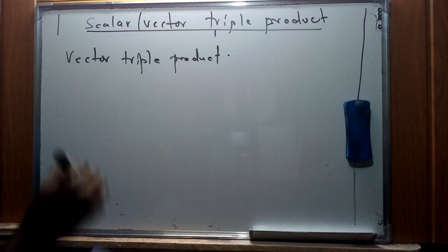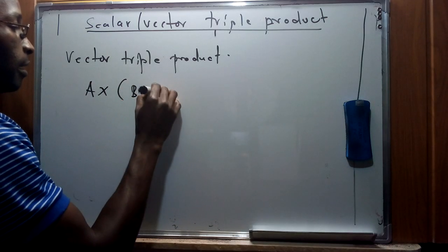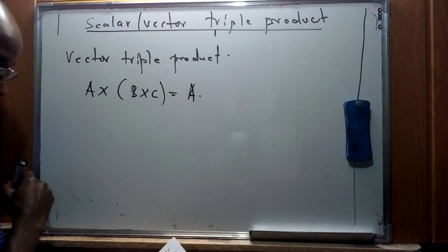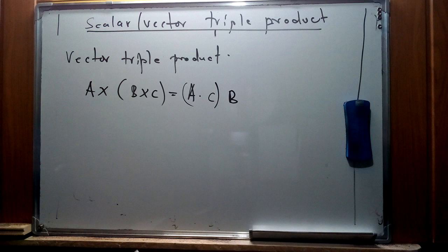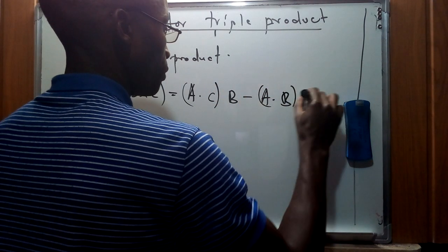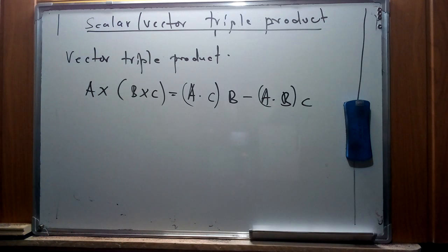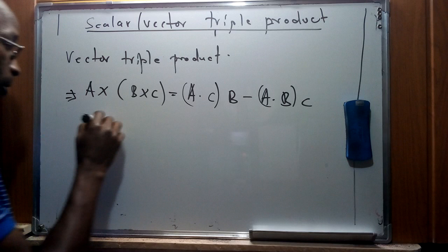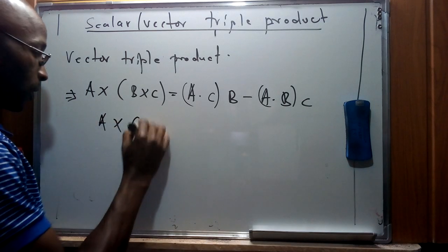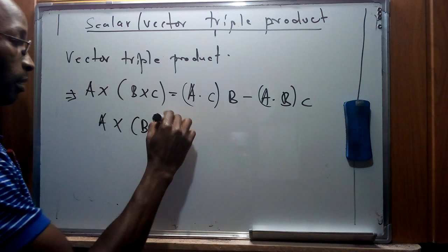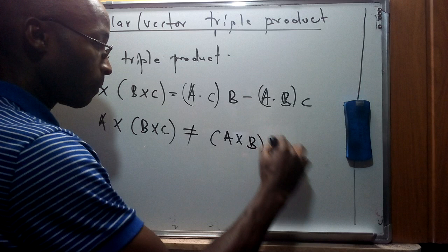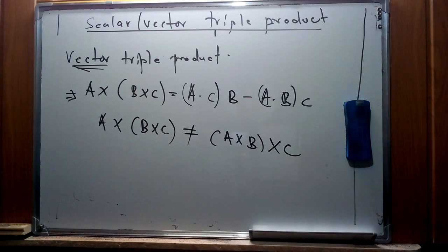The vector triple product can be represented as the cross product of a vector a with the cross product of two other vectors b and c. A key unique case here is that a × (b × c) will not be equal to (a × b) × c. We're going to use an example to demonstrate and conclude that these expressions for the vector triple product hold.